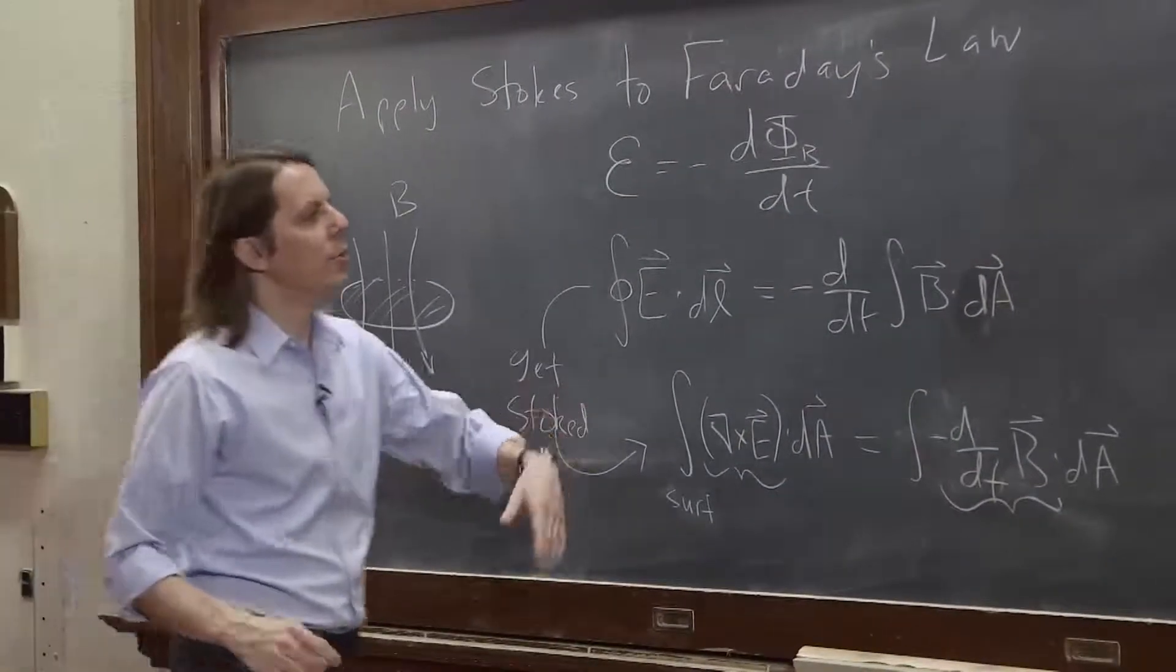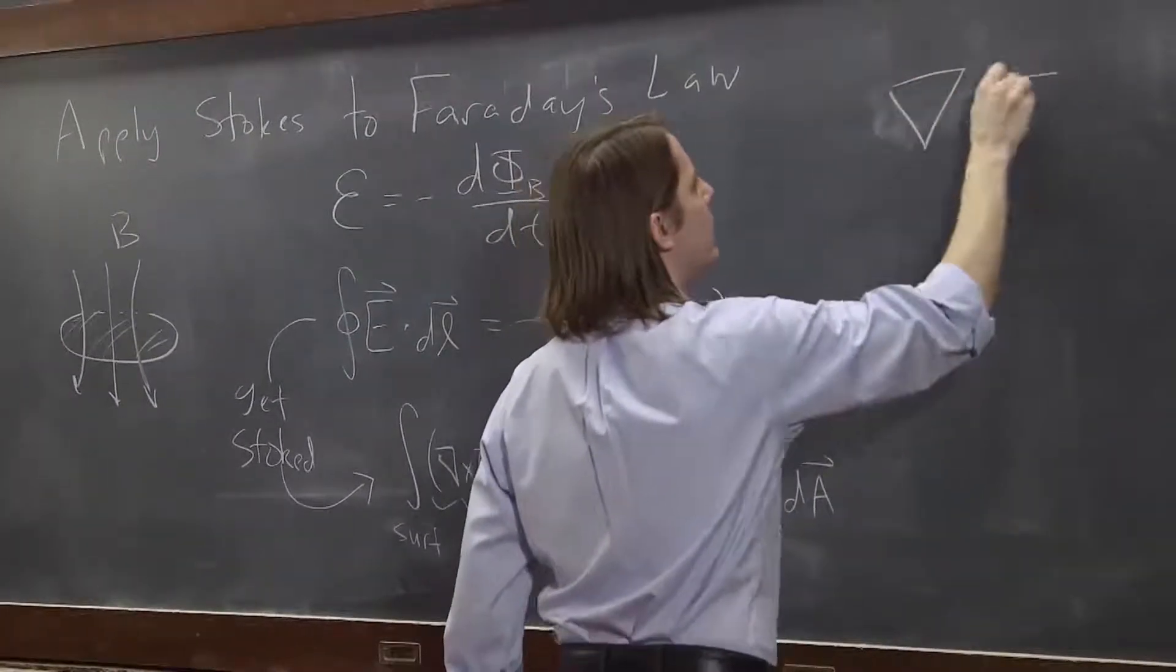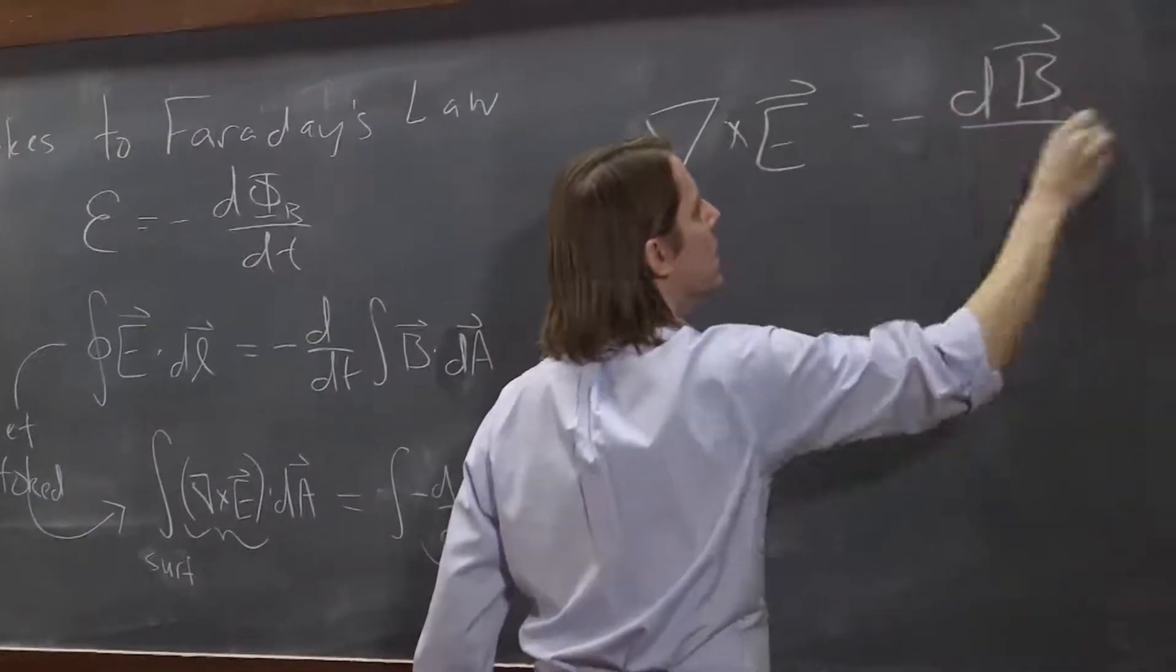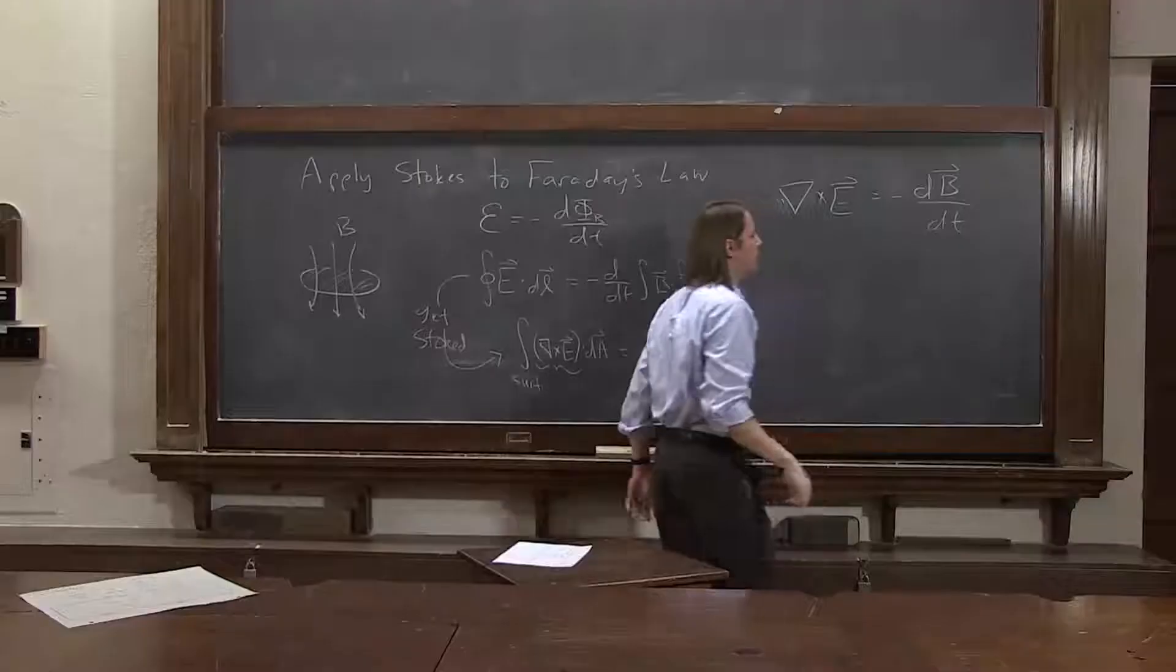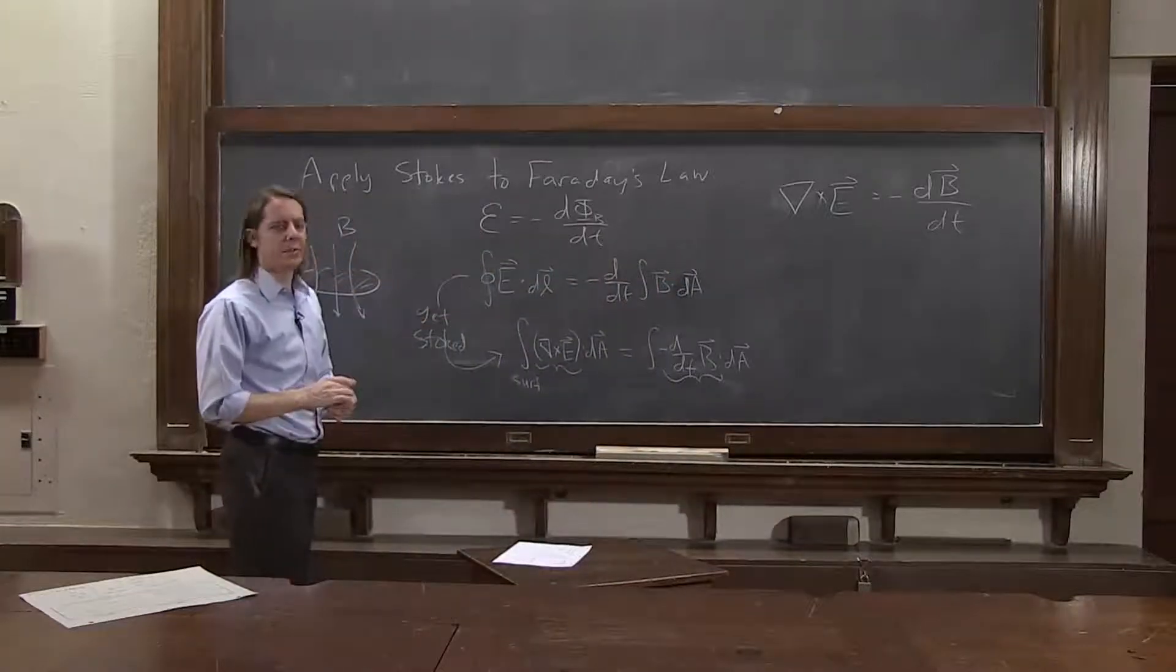So that's how we know the other version of Faraday's law, then, is del cross E is minus d B dt. That is the differential form where this is the integral form.